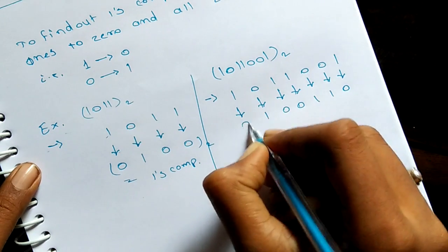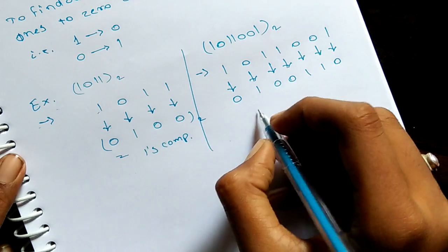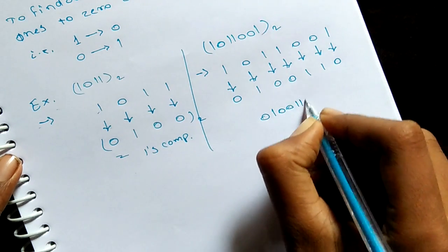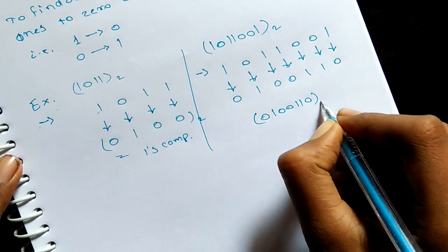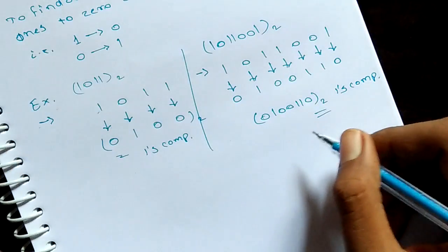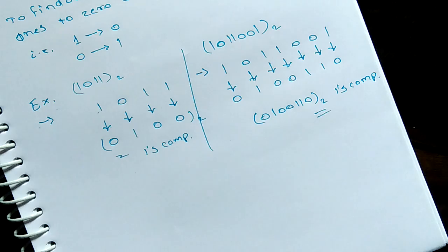This is a very simple process to obtain one's complement. Zero one zero one one zero one. This is the other one, one's complement. Okay, thanks friends for watching this video. Bye.